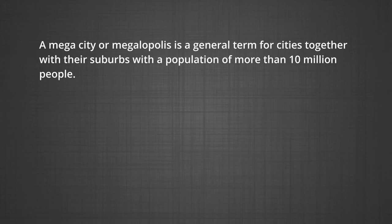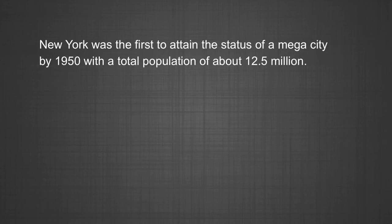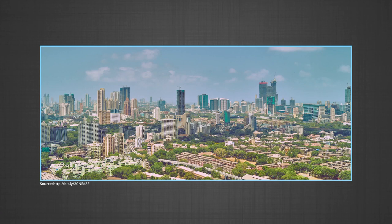Distribution of mega cities: A mega city is a general term for cities together with their suburbs with a population of more than 10 million people. New York was the first to attain the status of a mega city by 1950 with a total population of about 12.5 million. The number of mega cities in the world is now 27. The number of mega cities has increased in developing countries during the last 50 years at a faster pace than in developed countries.